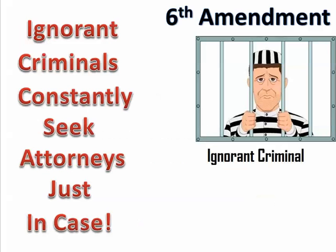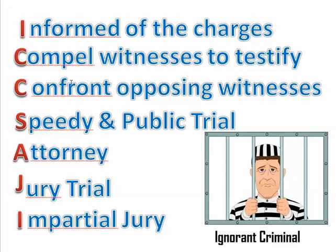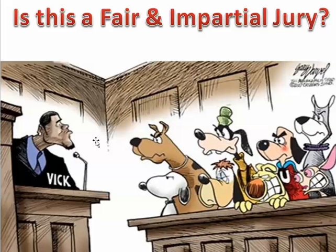The Sixth Amendment — a mnemonic for this is 'Ignorant criminals constantly seek attorneys just in case.' Protections include: to be informed of the charges against you, to compel witnesses to testify for you even if they don't want to, to confront witnesses against you, to have a speedy and public trial (Great Britain used to delay those to hurt defendants), the right to have an attorney present, the right to a jury trial of your peers, and the right to an impartial jury.